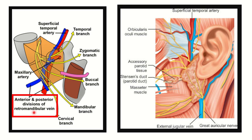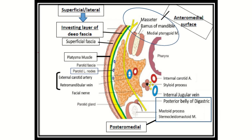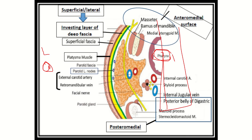This vein is the retromandibular vein, so it is now clear that the retromandibular vein is mainly responsible for the bleeding in this case. In another picture showing the outer and inner sides, with the midline visible, we can again confirm that just immediately inferior to the facial nerve, the first structure is the retromandibular vein.